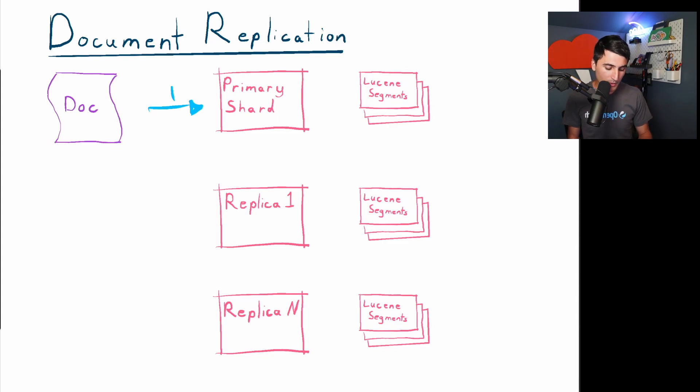Our primary shard ingests that into our Lucene segments, which for those who don't know, Lucene segments, that is our collection of documents that have been ingested into reverse indexes. Then after it's ingested it back into the Lucene segments, it's actually going to send the original document across the network to our replicas. Then those replicas are going to do the exact same work that the primary shard did and ingest back to their own Lucene segments.